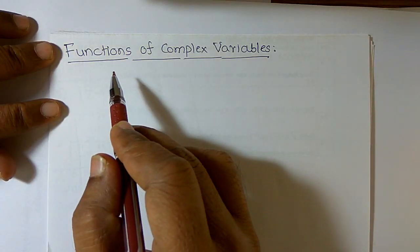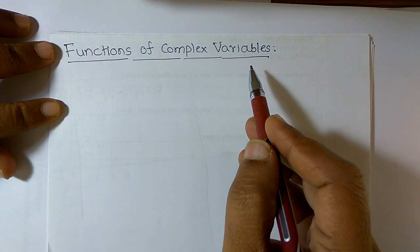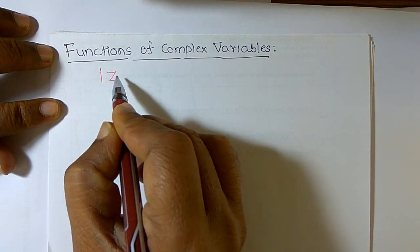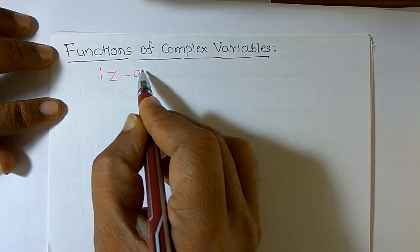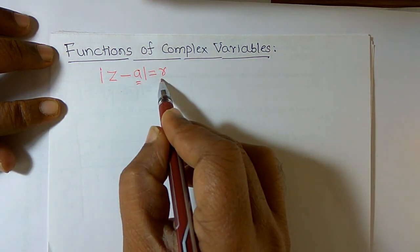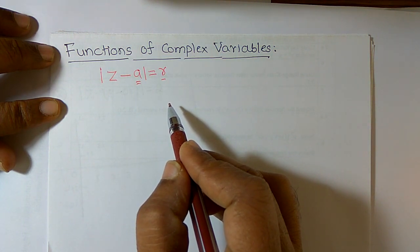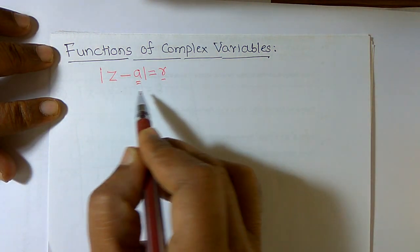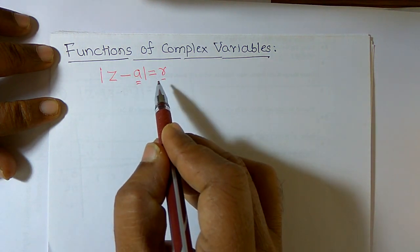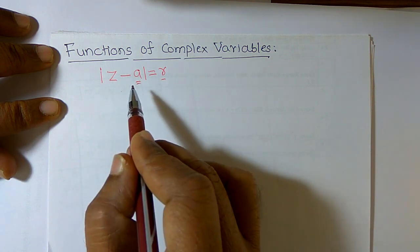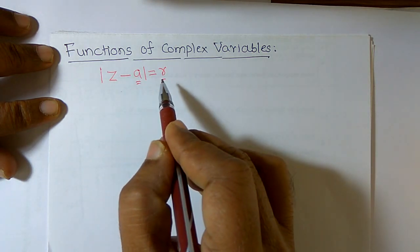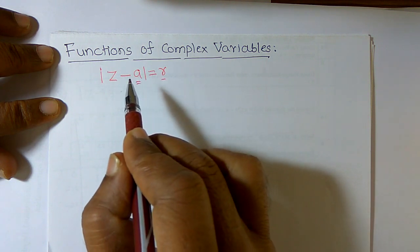Hello friends, welcome to functions of complex variable. Before defining functions of complex variable, I want to discuss the equation modulus of z minus a is equal to r. Here, a is a complex number and r is a real number. Geometrically, this equation represents a circle — the locus of points satisfying this condition with radius r around a.